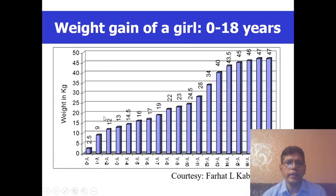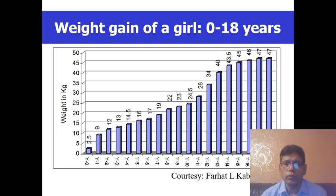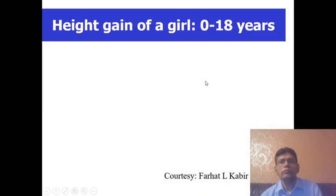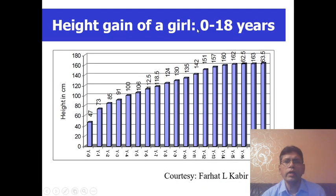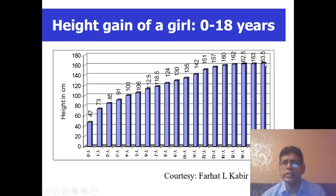This is the weight gain of a girl from birth up to 18 years. At birth she was 2.5 kilograms, and at the age of 18 years, 47 kilograms. This is the height gain of a girl from birth to 18 years. At birth she was 47 centimeters in supine length.